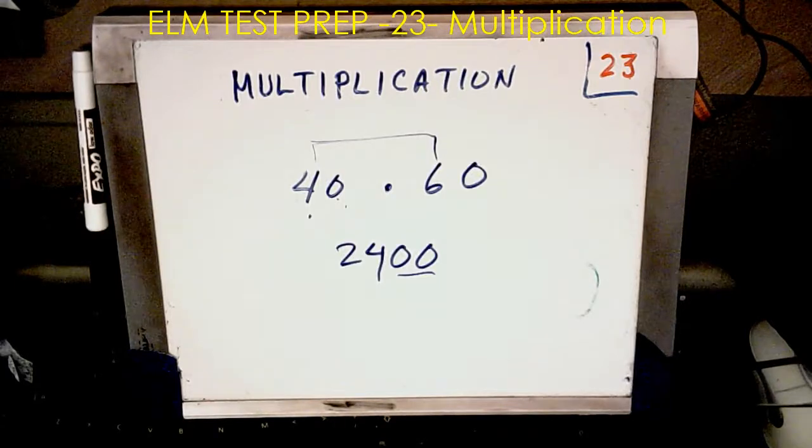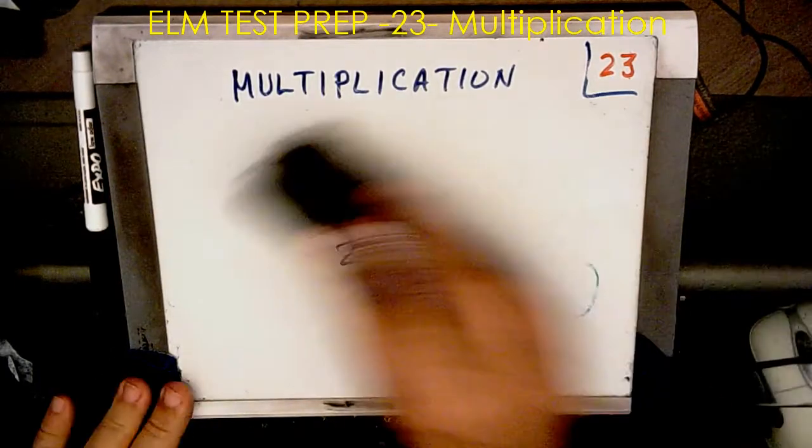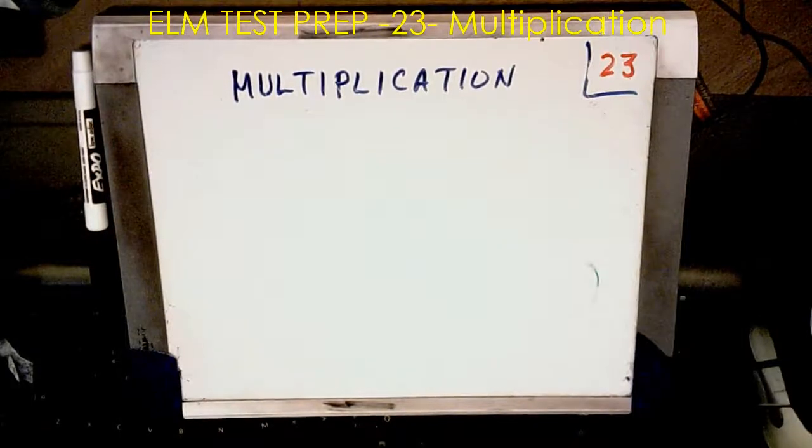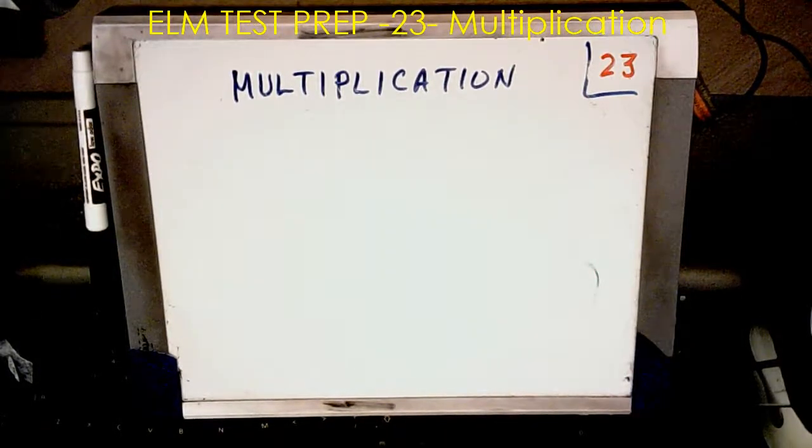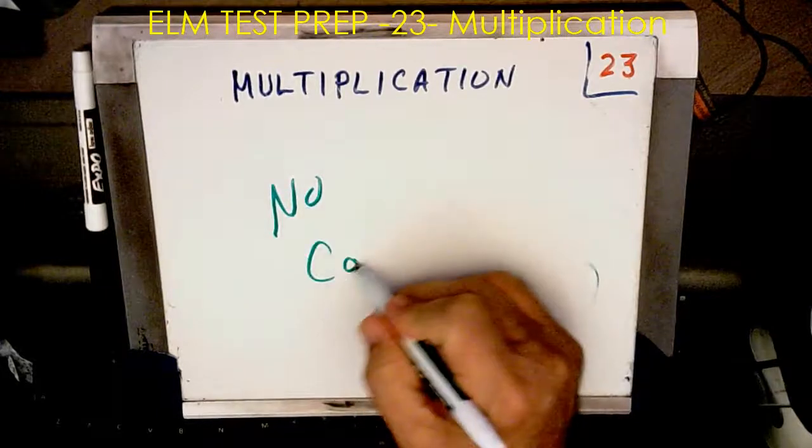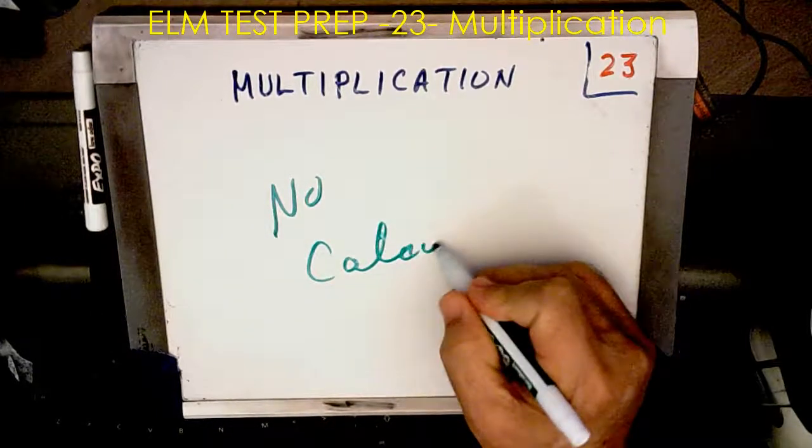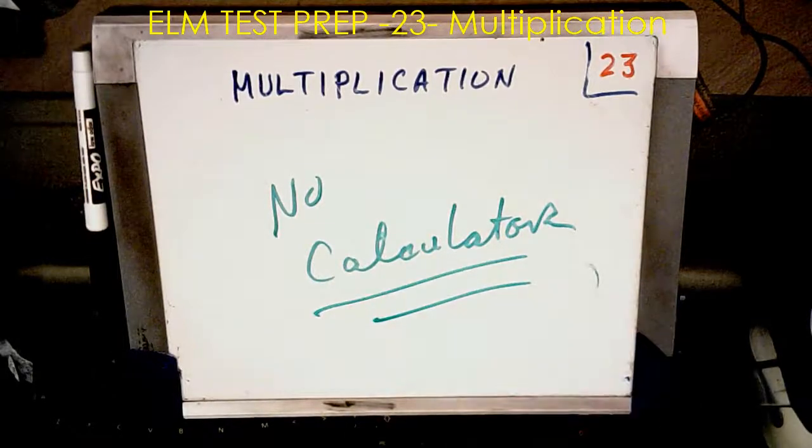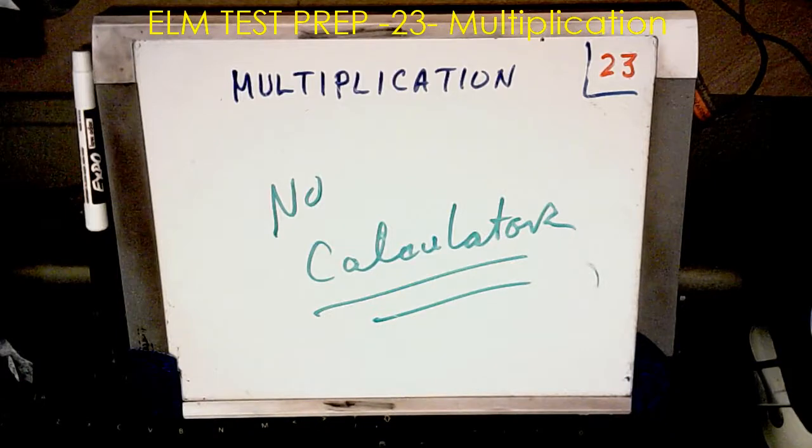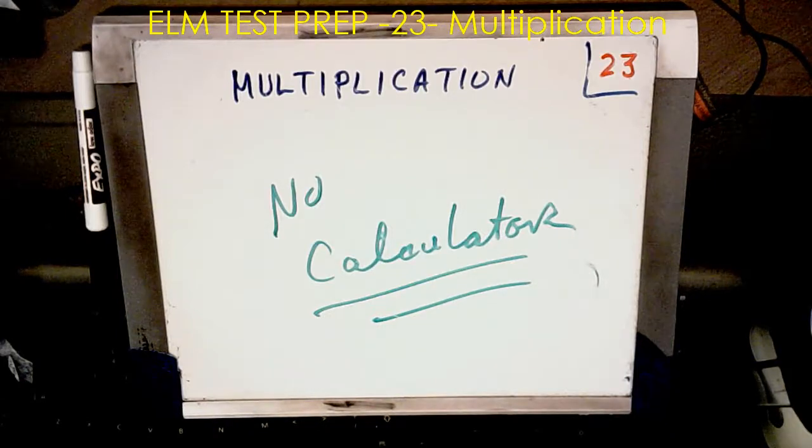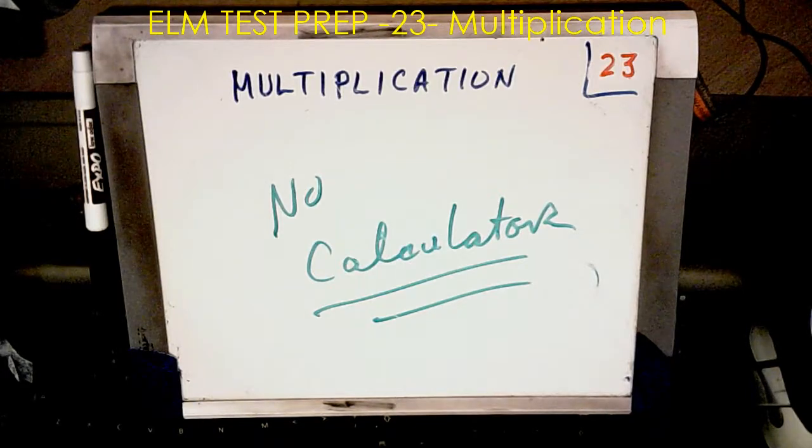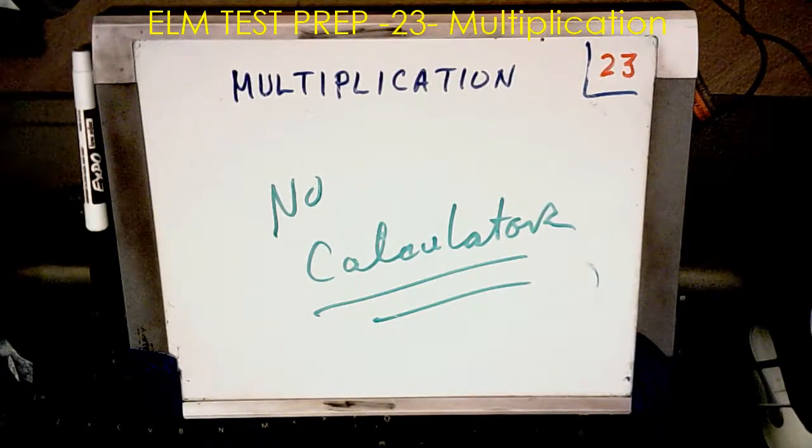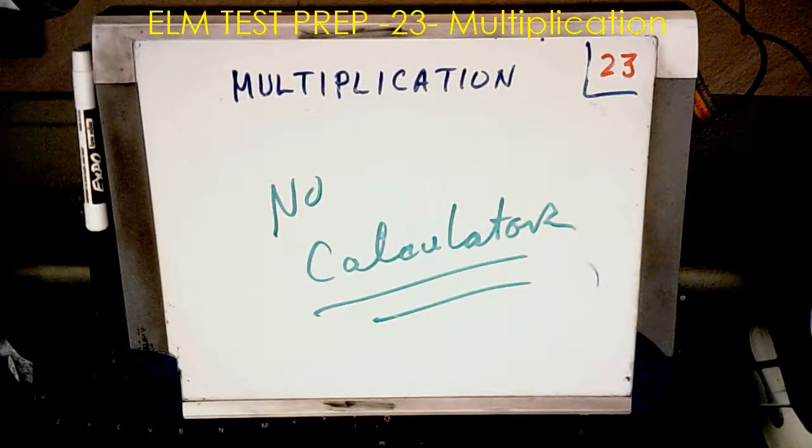So that is multiplication without a calculator, no calculator. And on the ELM test, that's what you're working with. You're working without a net. All right, so if you're the kind of person that relies heavily on your calculator, here's a good time to think about practicing not using your calculator. All right, I'm James. Have a good day.